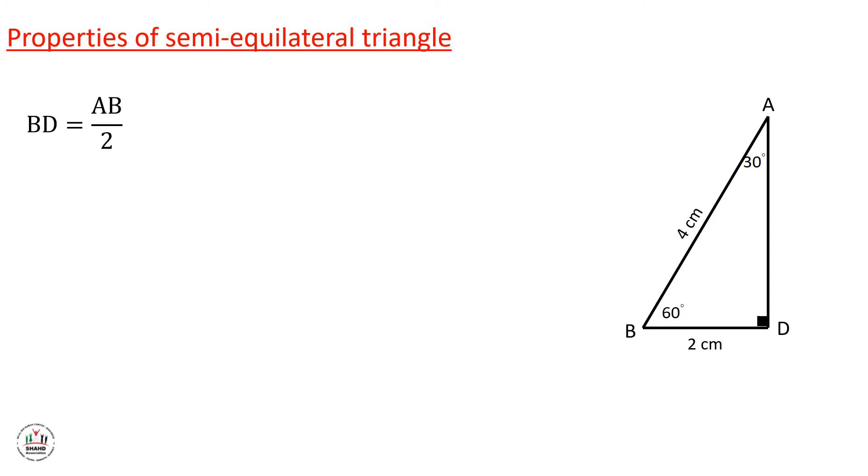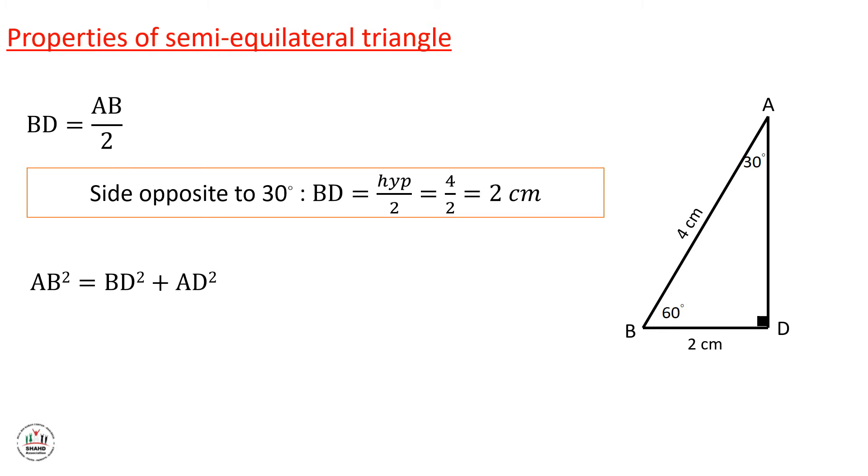Side opposite to 30 degrees, BD equals hypotenuse over 2, which equals 4 over 2, equals 2 cm. Since AB is the hypotenuse, we can use the Pythagorean theorem. AB squared equals BD squared plus AD squared. So AD will be equal to the square root of 4 squared minus 2 squared, which is 2 radical 3 centimeters.